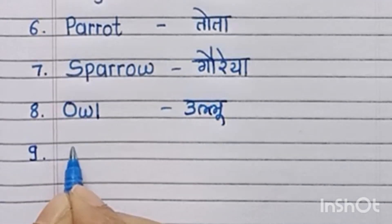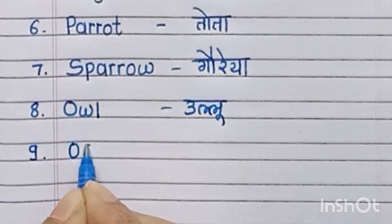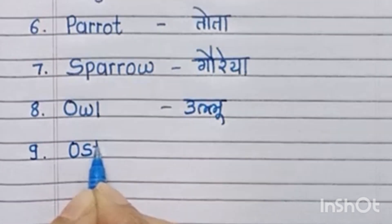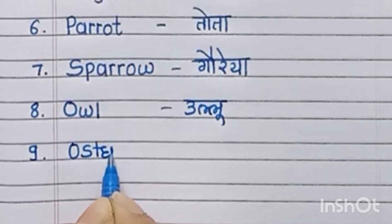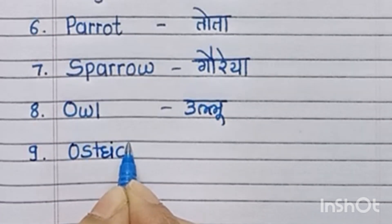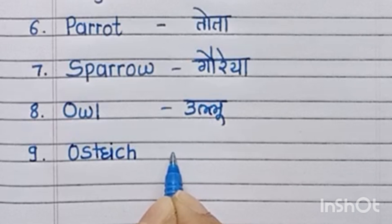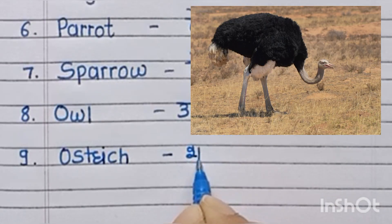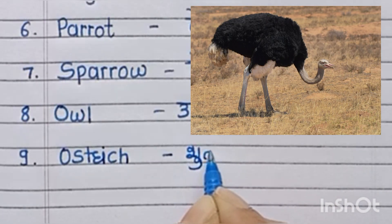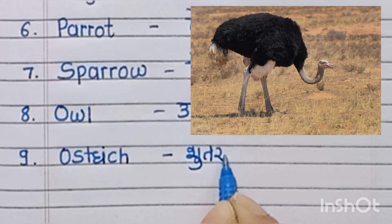Ninth, O-S-T-R-I-C-H, ostrich. Ostrich means sutarmurg.